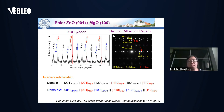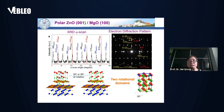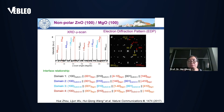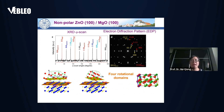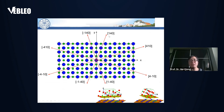For the interface structure, we found that there are two domains appearing in the polar hexagonal zinc oxide case. In the hexagonal symmetry, a 30-degree and 90-degree rotation are actually equivalent. For the non-polar zinc oxide case, we identified four rotational domains. The cubic substrate provides four identical sets of templates for the non-polar zinc oxide to grow, so you would expect four different rotations on top of that.